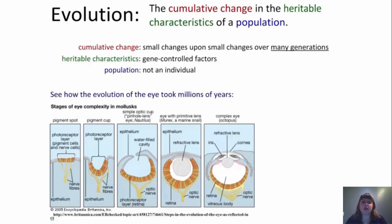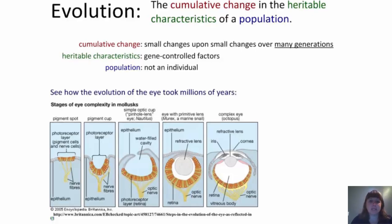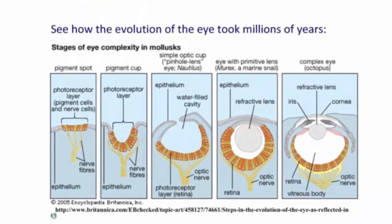Here you have a picture of how the evolution of the eye took millions of years. We started with just a pigment spot — a photoreceptive layer of pigment cells and nerve cells within the epithelium. That pigment spot evolved into a pigment cup, giving it a chalice-like look, as it folded in, still just the photoreceptive layer and nerve fibers within the epithelium.